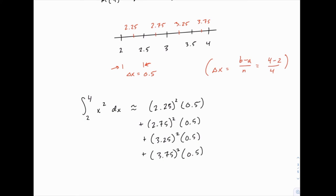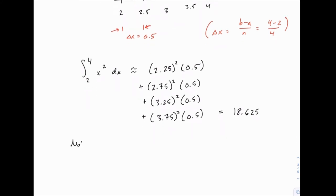So I won't go through and calculate this by hand. I'll just give you the answer you get at the end of this if you square each of these numbers and multiply by 0.5, and then add them all up. You should get 18.625 as the approximate answer for the integral from 2 to 4 of x squared. Now it turns out that this again is one that we can do analytically, so we know that this integral equals one-third x cubed evaluated from 2 to 4, which equals 56 over 3, which is about 18.7. So we're pretty close with our approximate answer here.